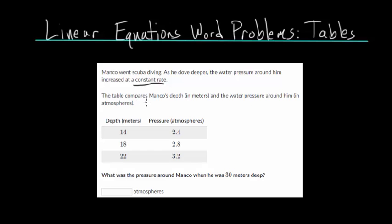The table compares Manco's depth in meters and the water pressure around him in atmospheres. They give us the table. What was the pressure around Manco when he was 30 meters deep? So we take a look at this table here, and you can see depth is on the left side and pressure on the right.